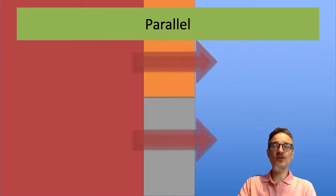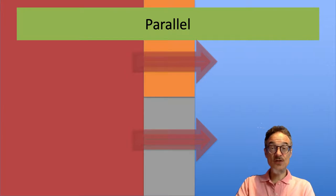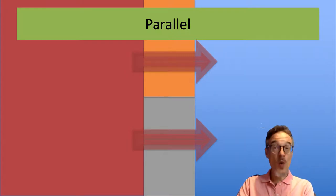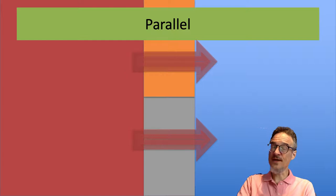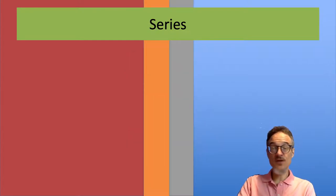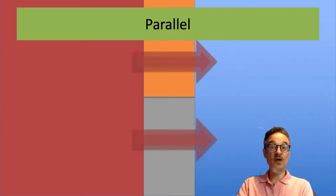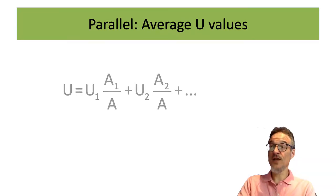How about parallel? Before we do the calculation, do we expect this U-value to be higher or lower? Is the parallel arrangement going to be better at insulating than series, or is series going to be better than parallel? Let's predict what kind of answer we'll get before doing the actual calculation.